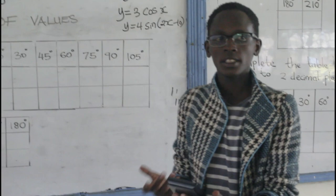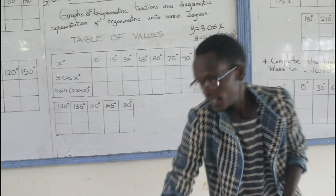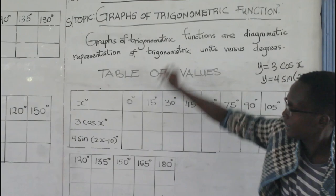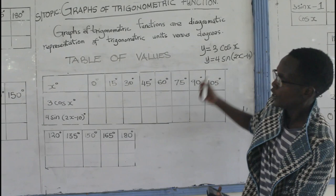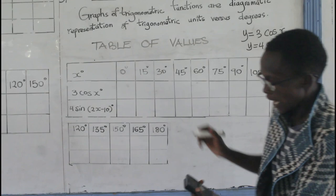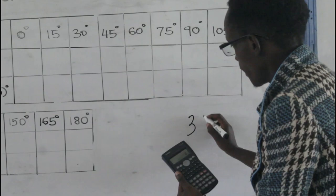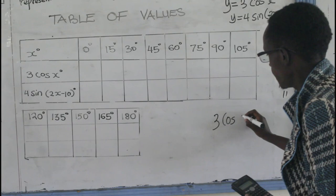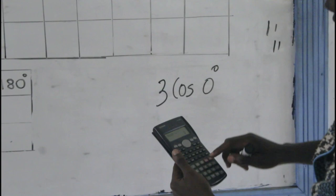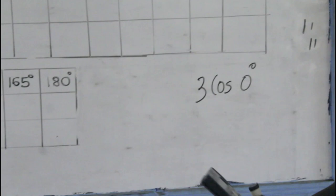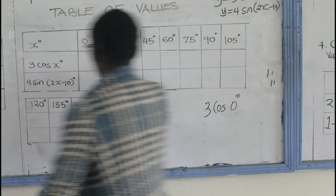To fill in the table of values, you'll need your calculator — make sure it is in the correct mode. For the first value, key in 3cos 0 degrees and you get the answer 3. So the first entry in the table is 3.